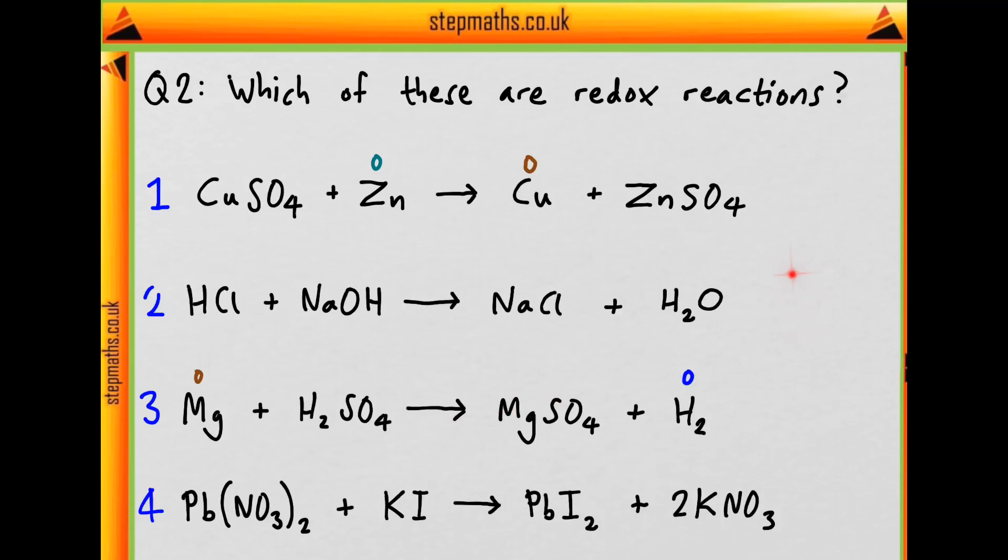Next, what about oxygen? We know this is always minus two. So let's put all these in, except when it's in a peroxide, but there are no peroxides here.